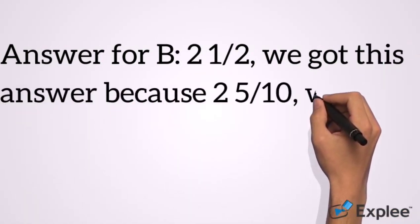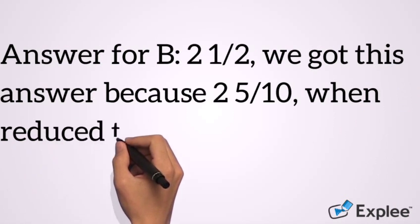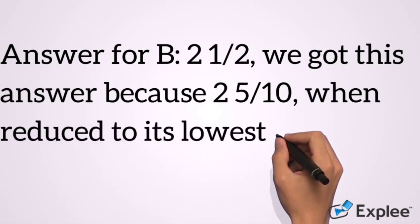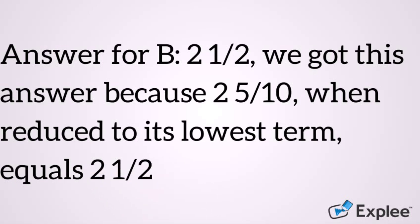For the fraction line B we got two and a half. How we got this is because it was two and five tenths. When we reduced two and five tenths to its lowest term, we got two and a half.